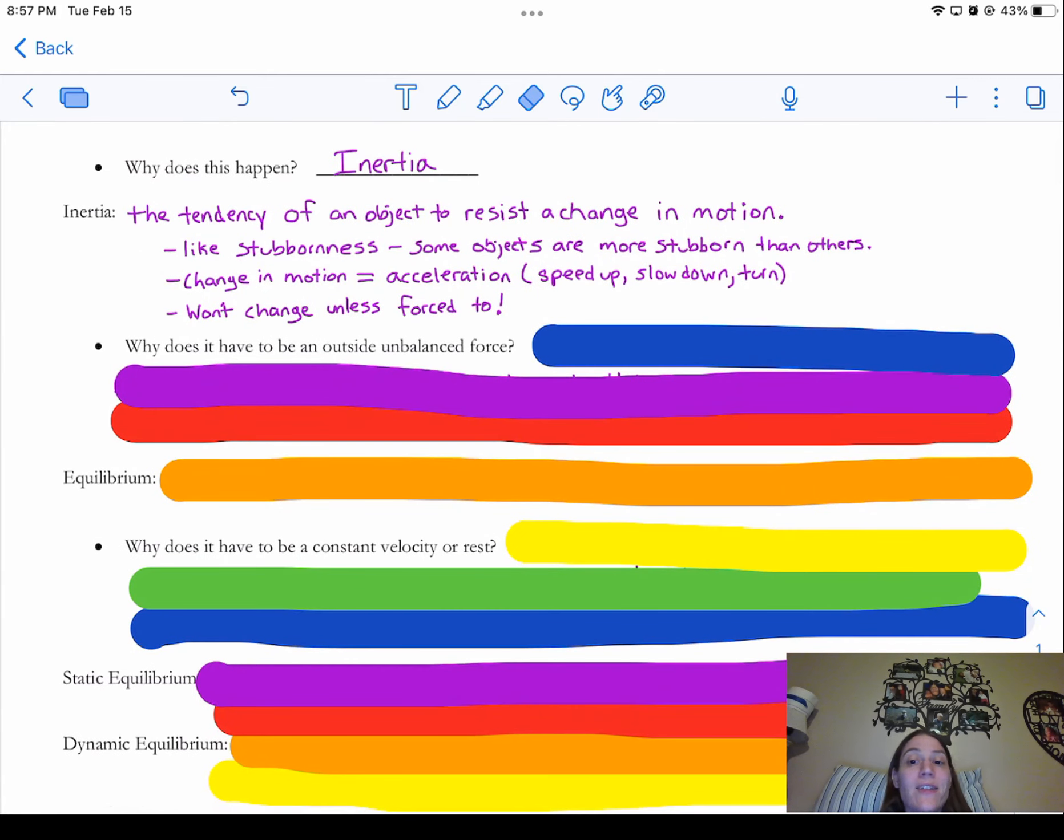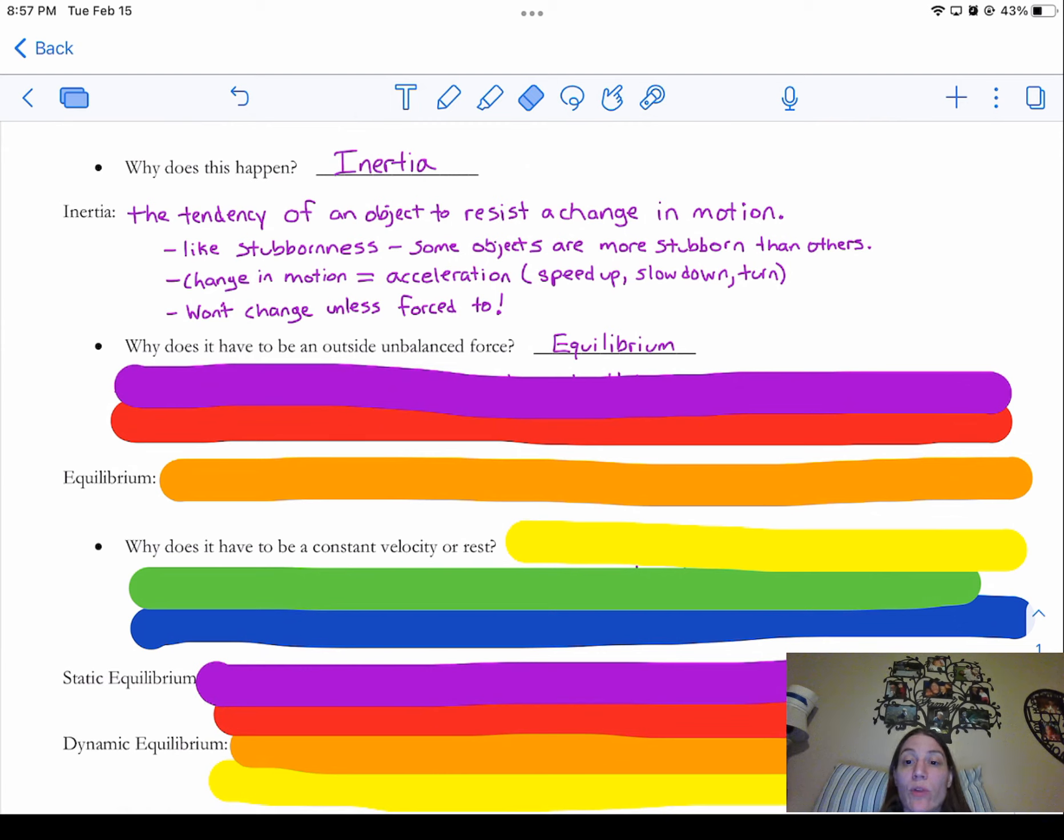That's what we need to know about objects and the First Law there. So why does it have to be an unbalanced force? Well, it's because when objects are in equilibrium, nothing's going to change. So let's talk about what equilibrium is.